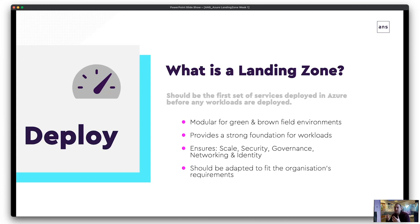A landing zone provides a strong foundation for workloads from a security and governance point of view, because it inherits policies put in place from the ground up — auditing, logging, making sure people can do what you want them to, not spinning up resources outside the UK for example. Permissions cascade down from that top level rather than being ad hoc configured per resource. It should be adapted to fit your requirements — choose the bits you need within the guidelines provided by the Cloud Adoption Framework.